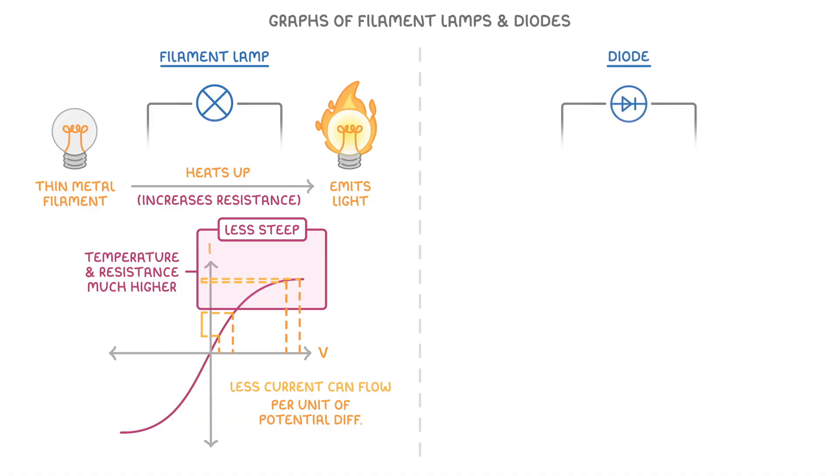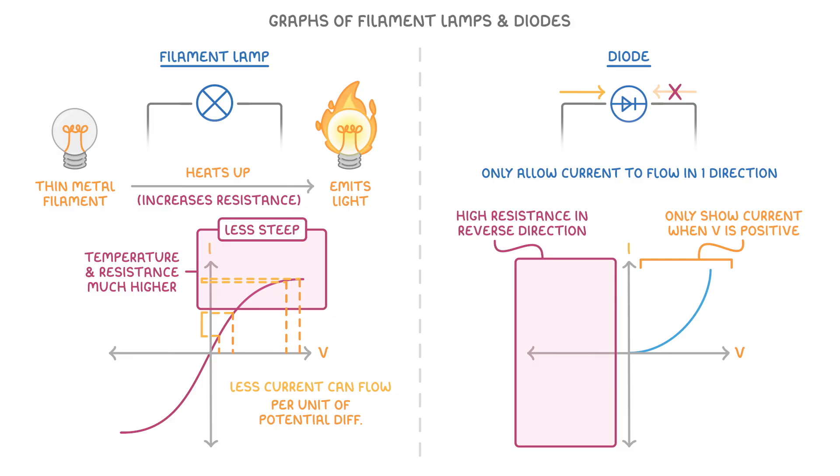Diodes, on the other hand, are devices that only allow current to flow in one direction. Which is why they only show a current when the potential difference is positive. They do this by having a really high resistance in the reverse direction, so that effectively no current is going to flow in that direction.